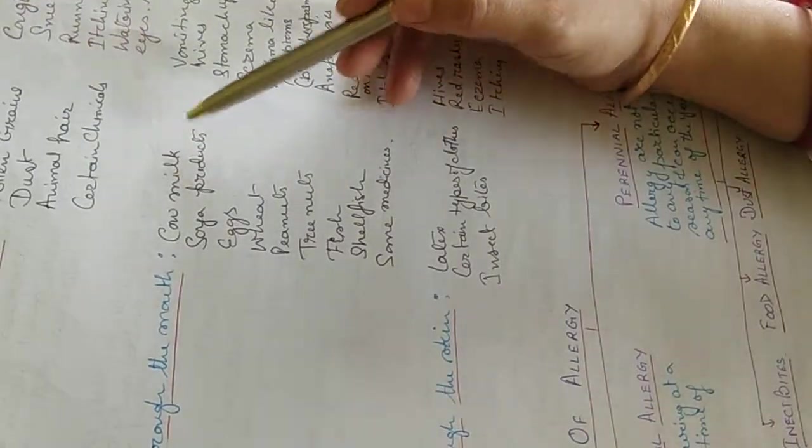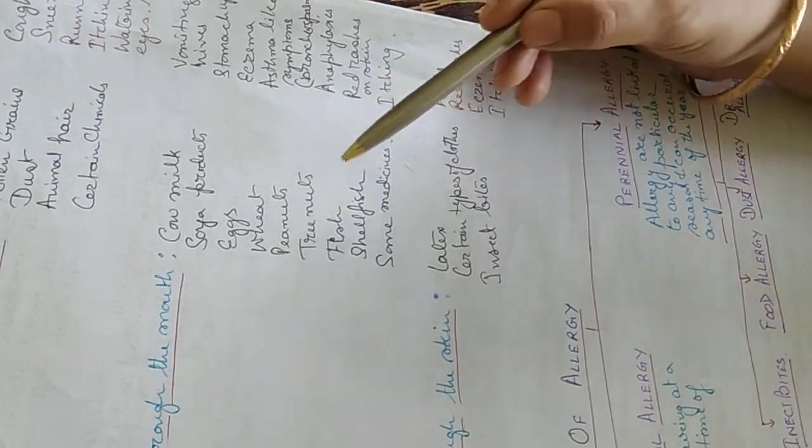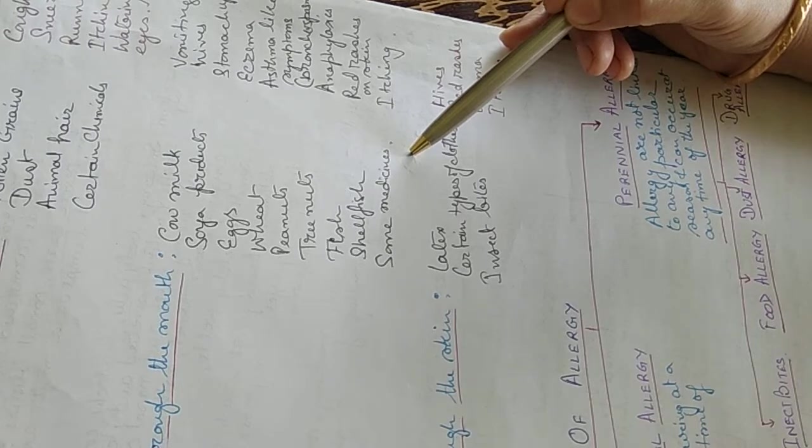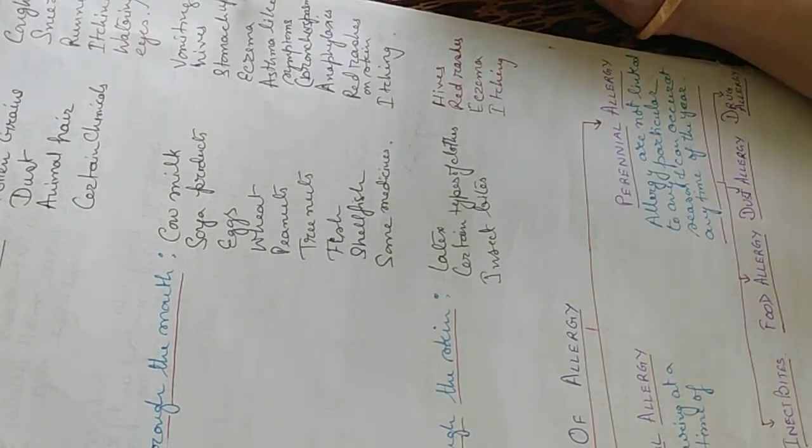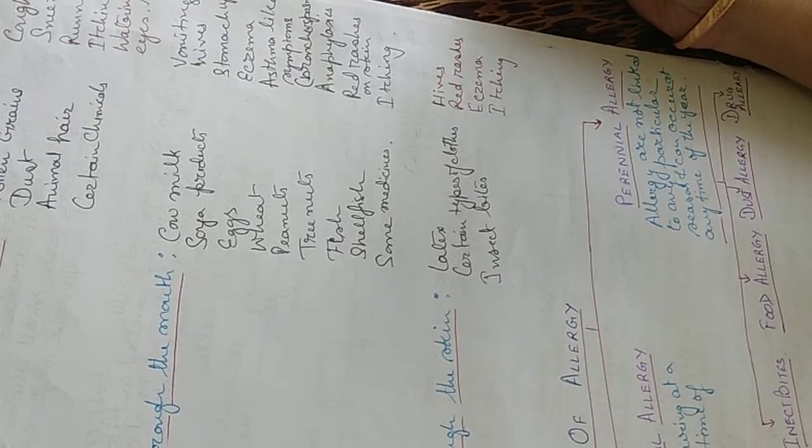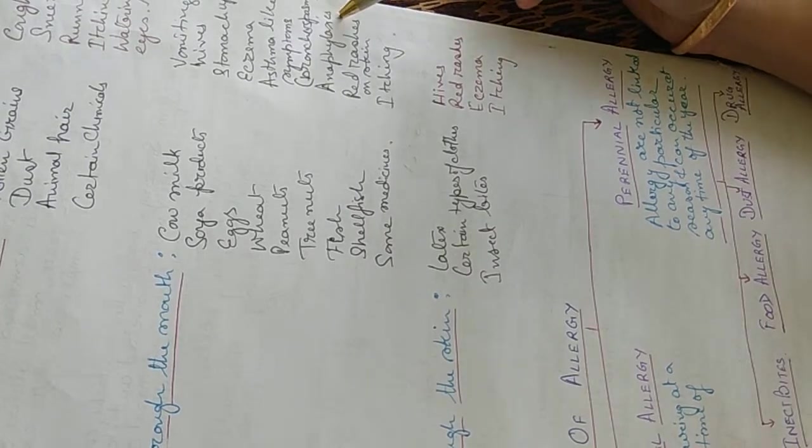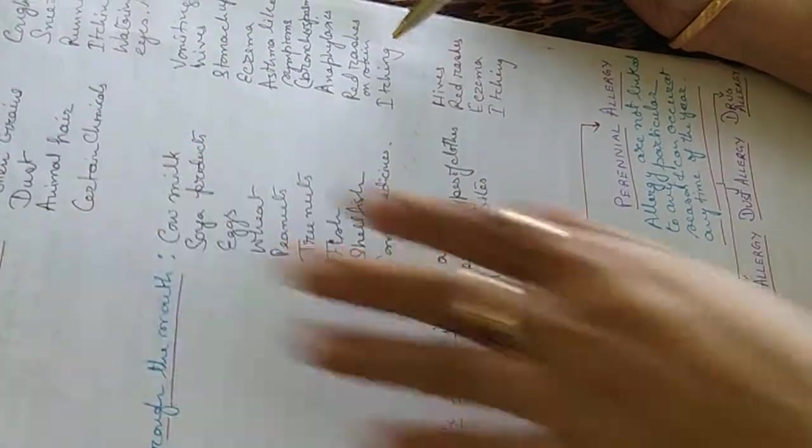When they enter through the mouth, they enter in the form of cow milk, soya products, eggs, wheat, peanuts, tree nuts, fish, shellfish and some medicines. They cause vomiting, hives, stomach upset, eczema, asthma-like symptoms like bronchial spasms, anaphylaxis, which is a severe type of allergic symptom, red rash on the skin and itching.